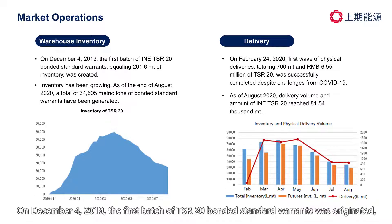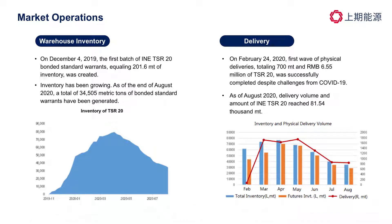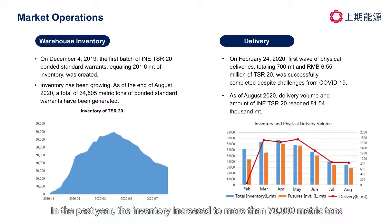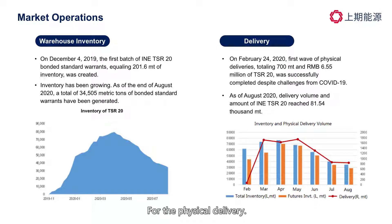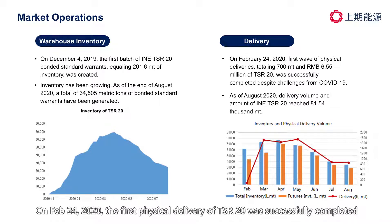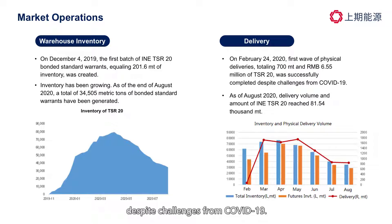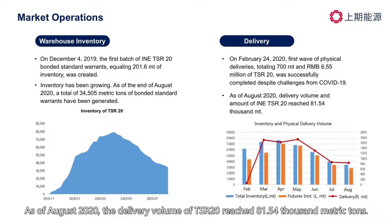For the warehouse inventory, on December 4, 2019, the first batch of TSR20 funded standard warrants was originated, equaling 201.6 metric tons. In the past year, the inventory increased to more than 70,000 metric tons, and has since decreased to about 30,000 metric tons, which serves as a thermometer for supply and demand of TSR20. For the physical delivery, on February 24, 2020, the first physical delivery of TSR20 was successfully completed despite challenges from COVID-19. As of August 2020, the delivery volume of TSR20 reached 81.54 thousand metric tons.